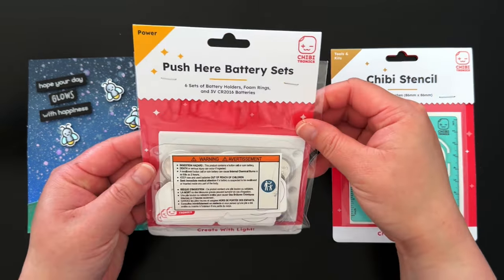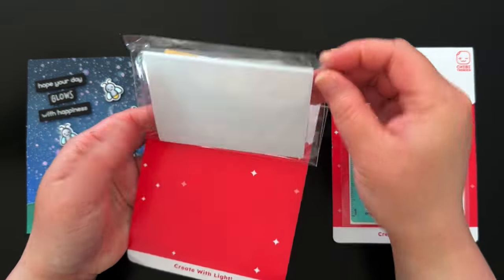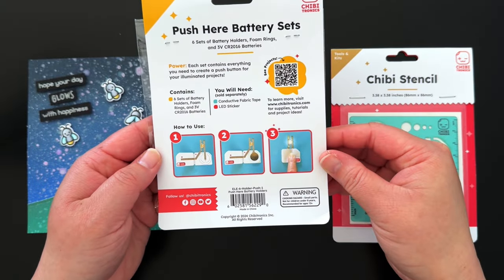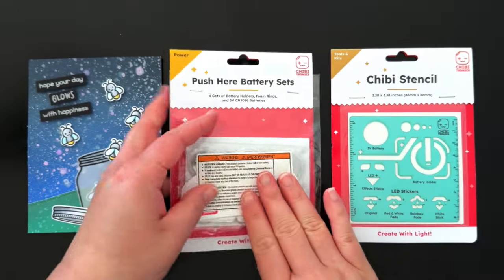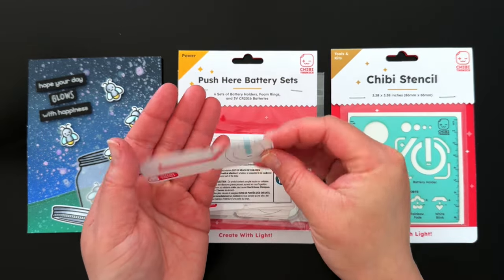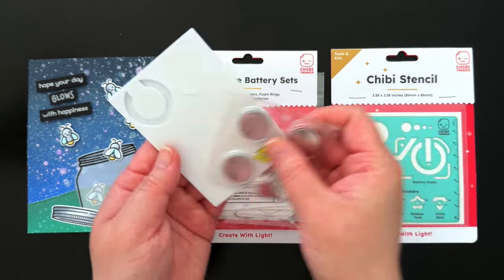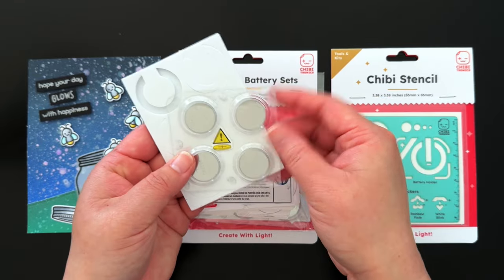First, we have our new Push Here battery sets. Our Push Here battery sets come in packs of six. You'll receive six battery holders, six foam rings, and six CR2016 coin cell batteries. I've already used two in this set, which is why I'm only holding four batteries. On the back of the package, you'll find instructions for using battery holders.